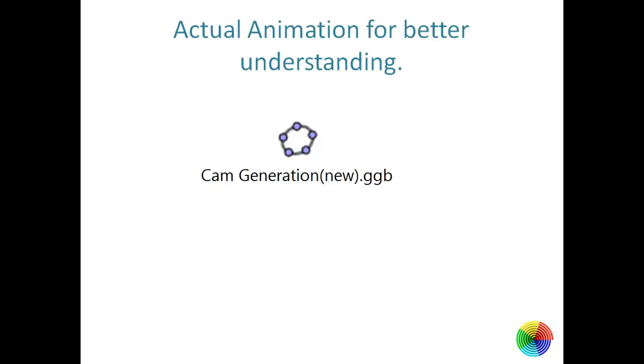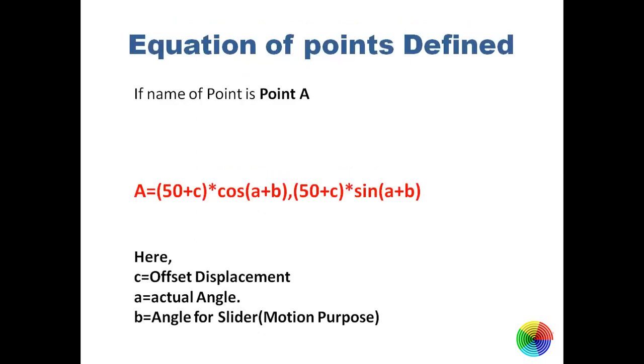We saw the animation, now we'll see how the equation of points is being given on GeoGebra, because basic principles of GeoGebra work on equations. The whole equation behind any point A is equal to its base diameter plus offset displacement into cos of actual angle plus angle for slider. The y coordinate will be given by base radius plus offset displacement into sin of actual angle plus angle of slider.